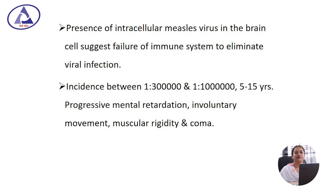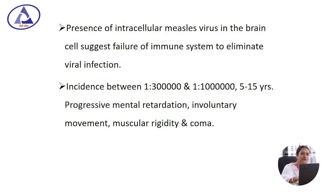Presence of intracellular measles virus in the brain tissue suggests failure of the immune system to eliminate the viral infection. Incidence varies between 1 per 100,000 to 1 per million, occurring 5–15 years after infection. Progressive mental retardation, involuntary movements, muscular rigidity, and coma occur in SSPE.